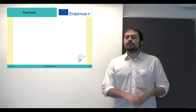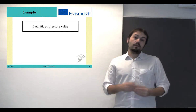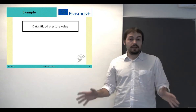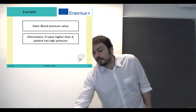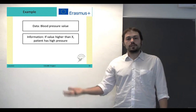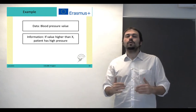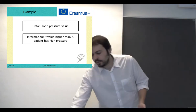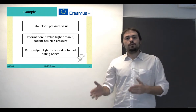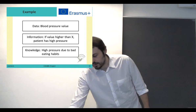This may seem abstract, so let's look at a concrete example. First, we have data — like blood pressure values from measurements of many patients. They are just raw values, and we don't know anything about them. Then we move to information: if the value of those measurements is higher than a certain threshold, then we know that a patient has high blood pressure. And now, what do we do with that information? We extract knowledge — we can say that a patient with high blood pressure could be due to bad eating habits. That is what data, information, and knowledge is all about.